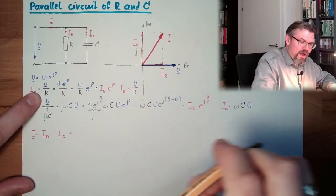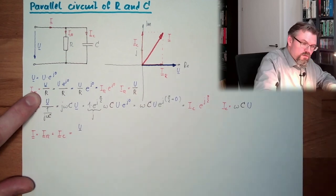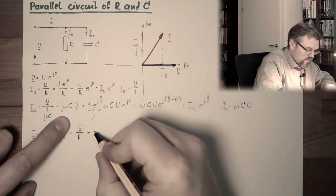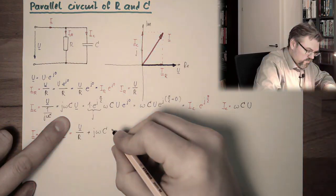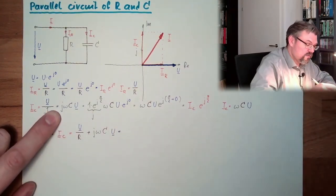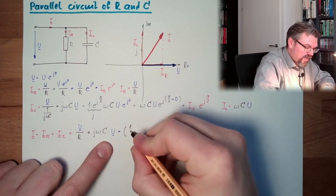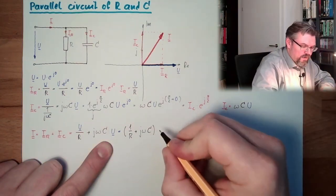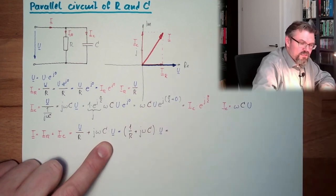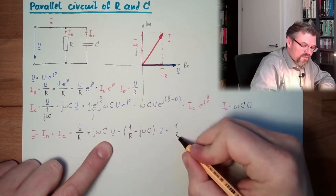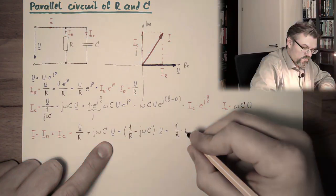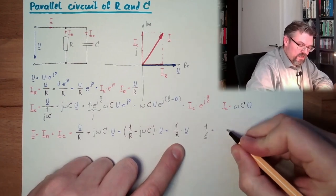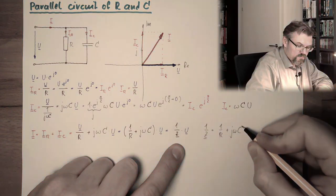And this equals IR was U divided by R, and then we have plus, and we will use this one, jωC multiplied by U. And now I can factor out U. What remains inside is 1 divided by R plus jωC. Where I can directly follow that my inverted complex impedance 1 divided by Z equals 1 divided by R plus jωC. That's it.